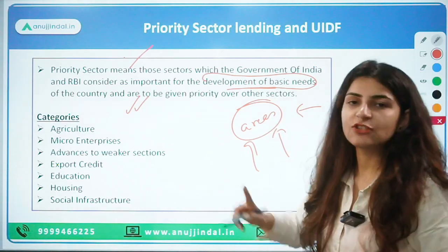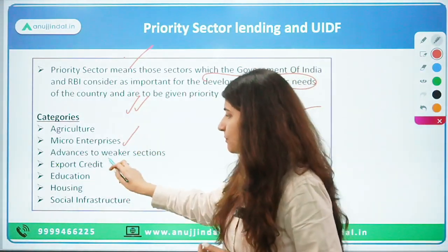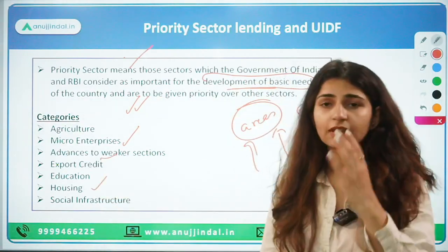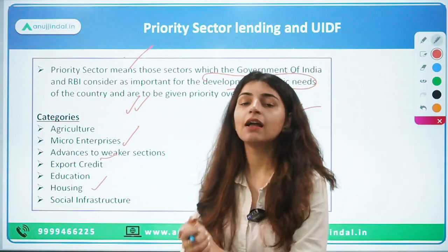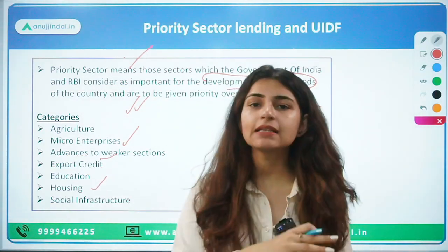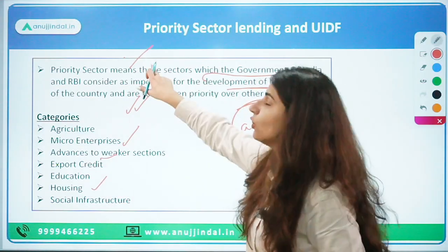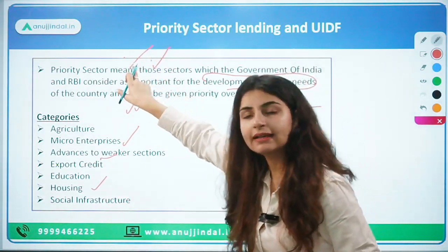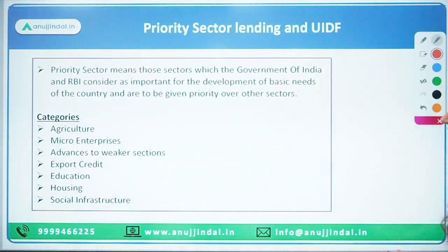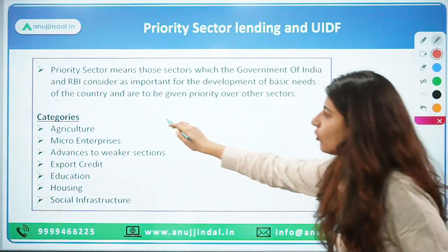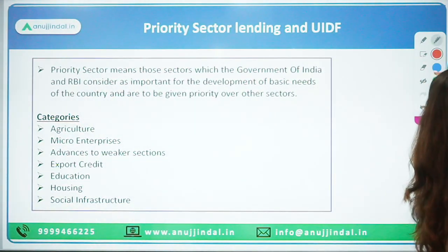For example, sectors given priority include education, healthcare, agriculture, micro-enterprises, export credit, and housing. RBI and the government of India want banks to mandatorily contribute by lending in these priority sectors. These are the sectors that fall under the PSL category.